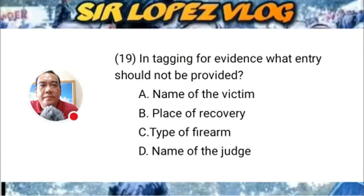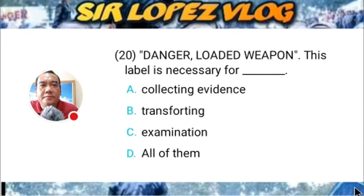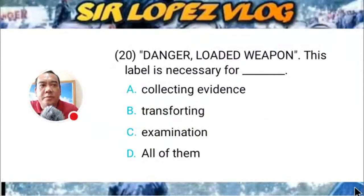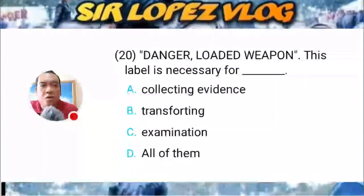Question number twenty: 'Danger — loaded weapon.' This label is necessary for: A) collecting evidence, B) transporting, C) examination, or D) all of them?